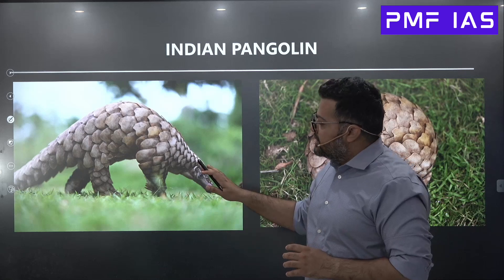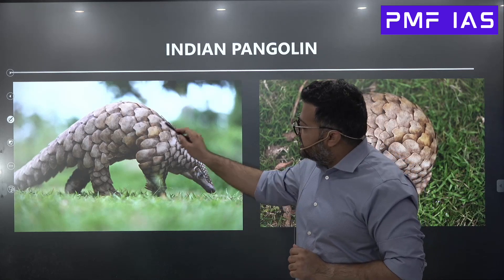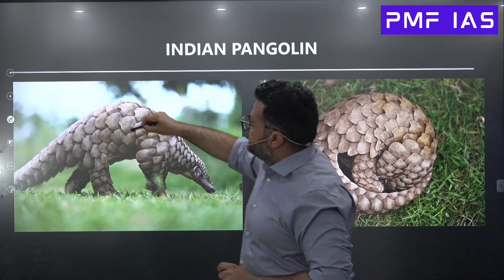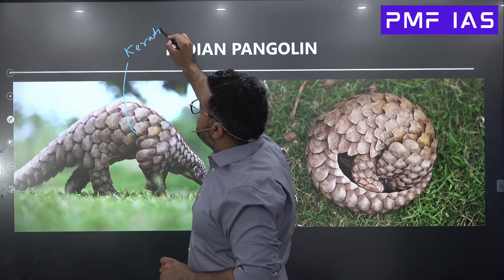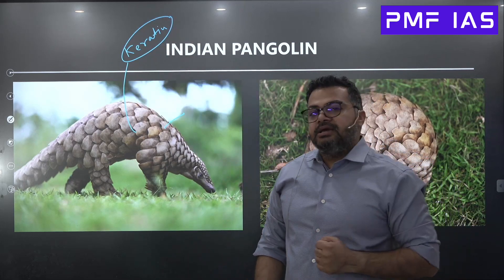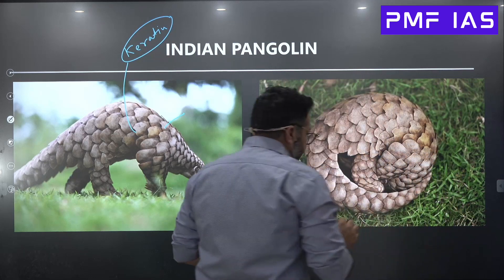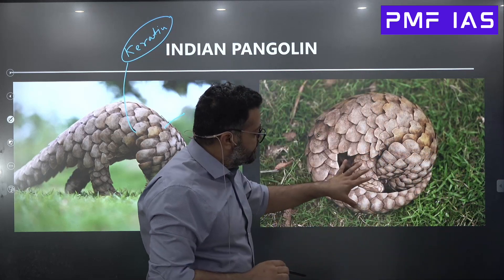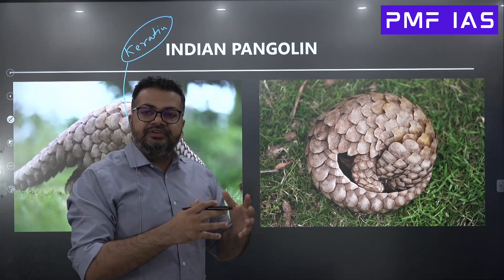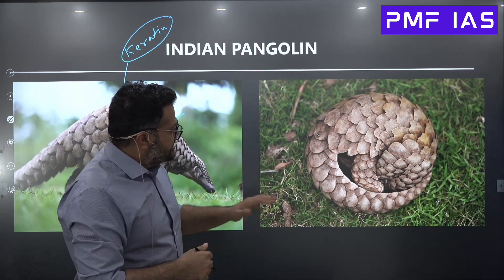The Indian pangolin is a mammal that comes from the rodent family, and it has scales on its skin. The scales are basically made up of keratin — the same protein which is found in our fingernails. The image on the right shows the defensive posture the pangolin takes when it is in fear or protecting itself from predators.